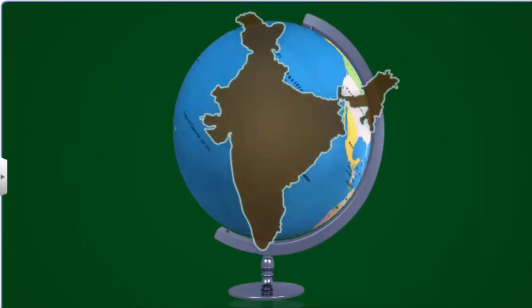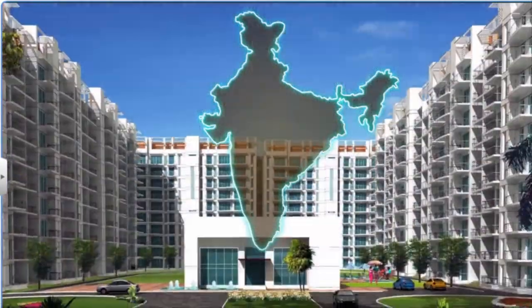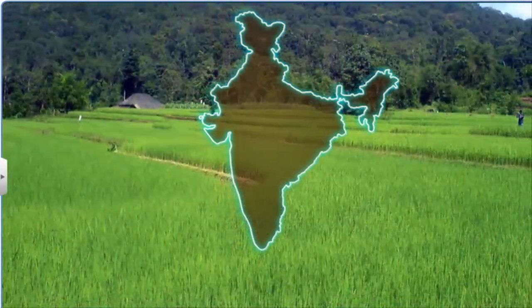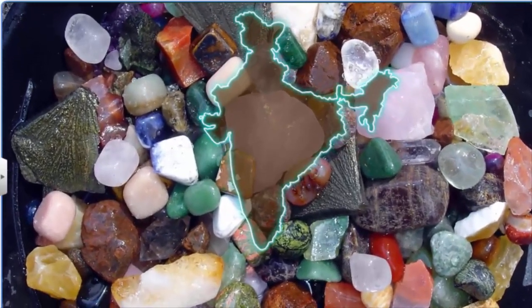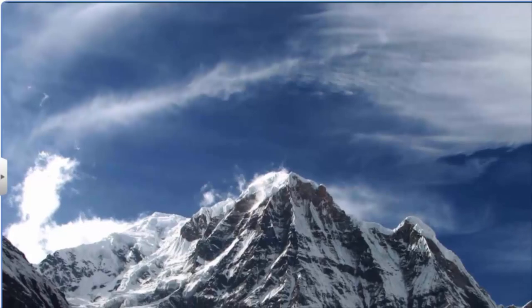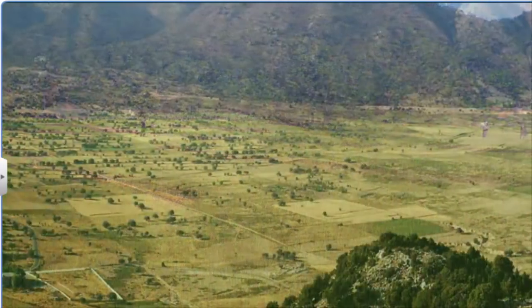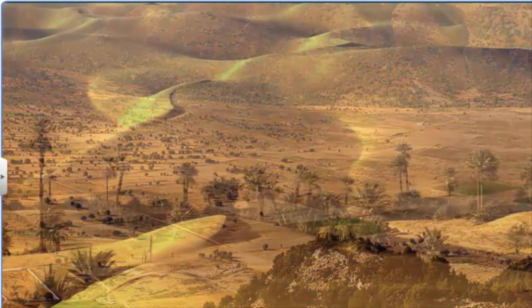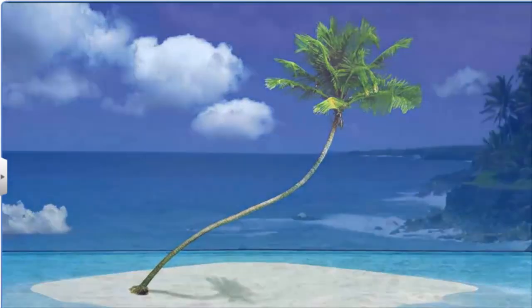India is the seventh-largest country in the world, with a geographical area of about 3.28 million square kilometers. This land is a valuable resource that supports our population, buildings, farmlands, and forests, and also provides rich mineral, water, and soil resources. India has widely different geographical features, from lofty mountains in the north to vast plains and plateaus in the central region, from deserts in the west to dense forests in the east, and islands in the south, besides a long coastline.